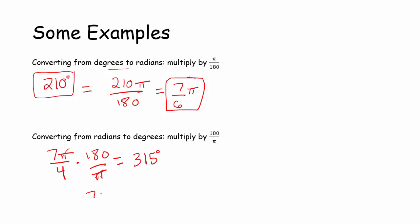So then I can do 7 times 45 is 315 degrees. So 7π/4 radians is the same as 315 degrees.